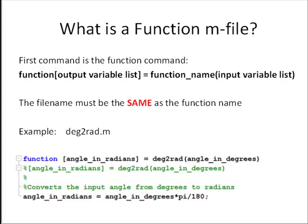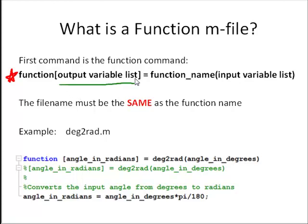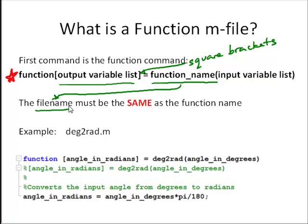So what is a function mFile? The main difference between a function mFile and a script mFile when you open it up in the MATLAB editor is the first command. What makes an mFile a function mFile is having as its first line the function command. The syntax of the function command is the word function, then an output variable list in square brackets, then the function name, and then in parentheses an input variable list. The square brackets aren't necessary if you only have one output variable, but it's fine to leave them there. One note: the function name must be exactly the same as the file name — that's how MATLAB knows how to use that function.